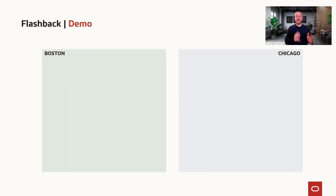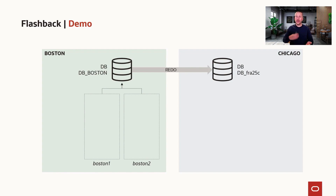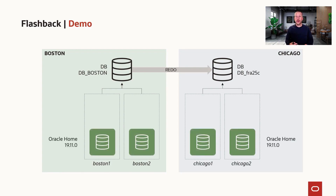In the demo, we have two sites, Boston and Chicago. We have one database called DB — a very creative name. DB Boston is the primary database, and on the Chicago side, we have DB FRA 25C. The primary database is a RAC database running on two nodes, Boston 1 and Boston 2, and the same applies for the standby database, Chicago 1 and Chicago 2. The database has just been upgraded to 19.11 from 12.102, and both Oracle homes are still present on all of the nodes.